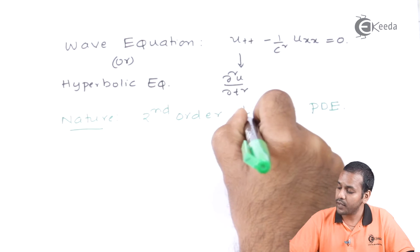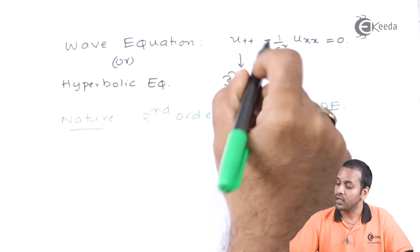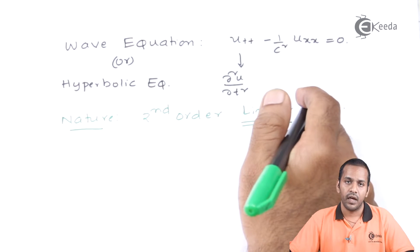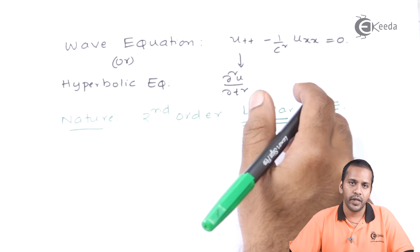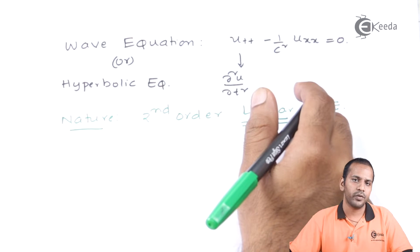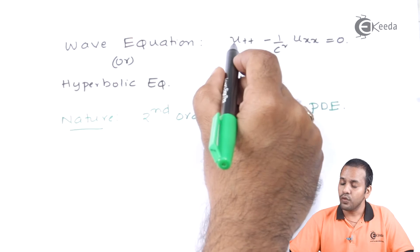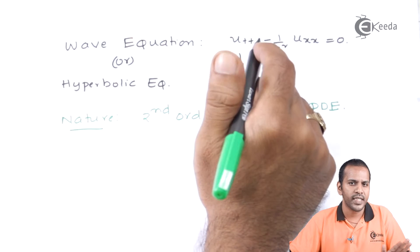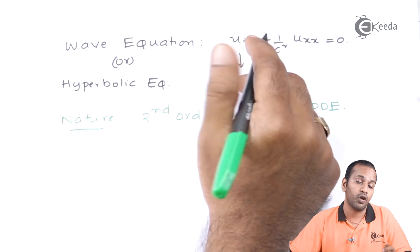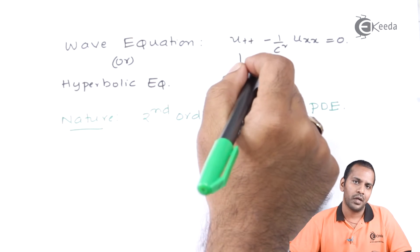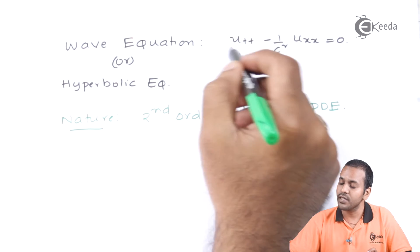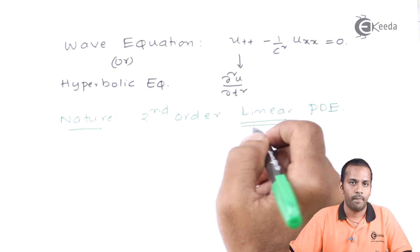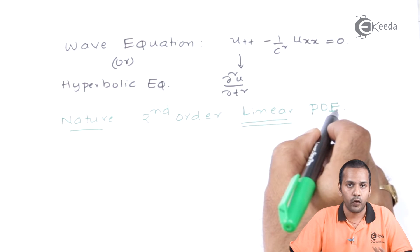An equation is said to be linear if the dependent variable and its derivatives are not multiplied together. That is, if u and u′, or u′ and u″ multiply together in the same equation, then that equation is nonlinear. Since those expressions are not present here, these are linear PDEs.